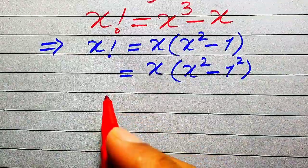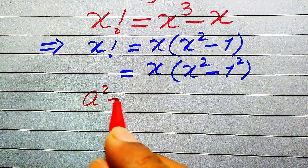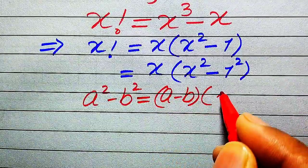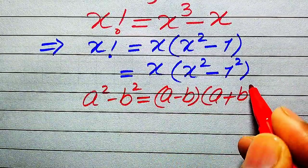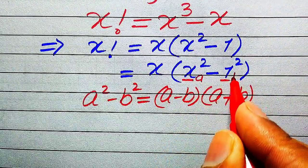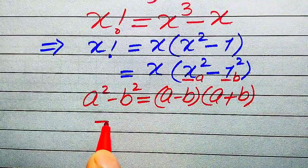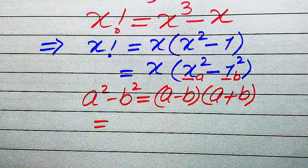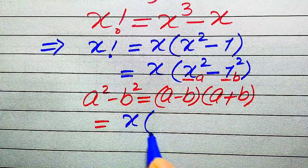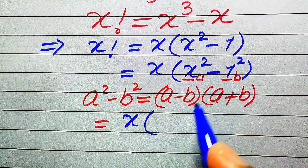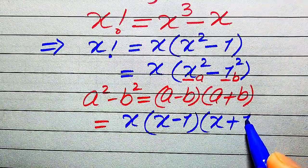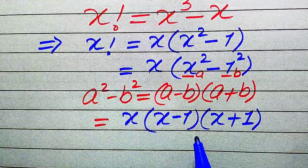Now we use the algebraic formula: a squared minus b squared equals (a minus b)(a plus b). Here x is our a and 1 is our b. Applying this formula to the right hand side, it becomes x times (x minus 1) times (x plus 1).